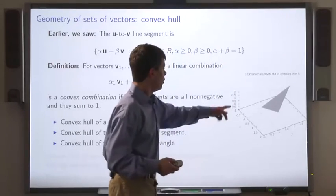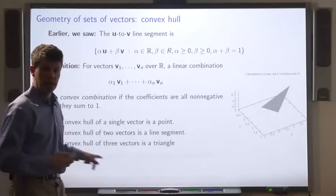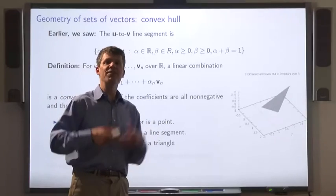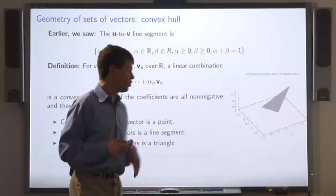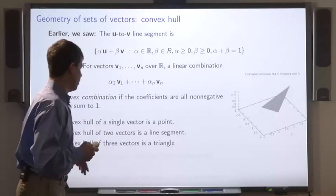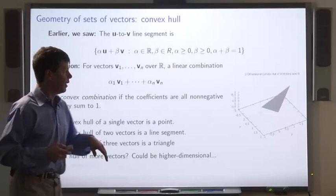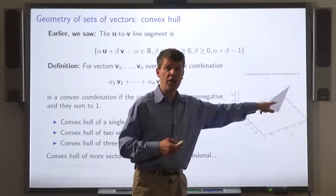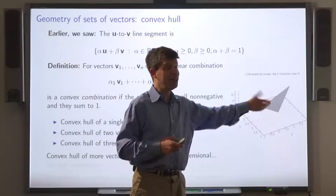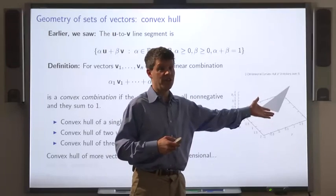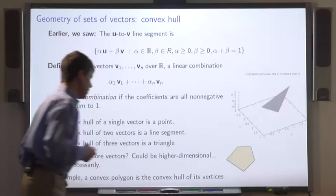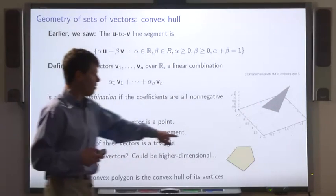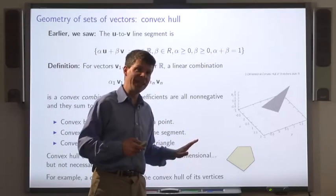You would think that more vectors always gives a higher-dimensional object, but that's not always true. For example, if three points are collinear — on the same line — their convex hull is a line segment. Similarly, if you have a bunch of points all in the same plane, their convex hull forms a polygon.